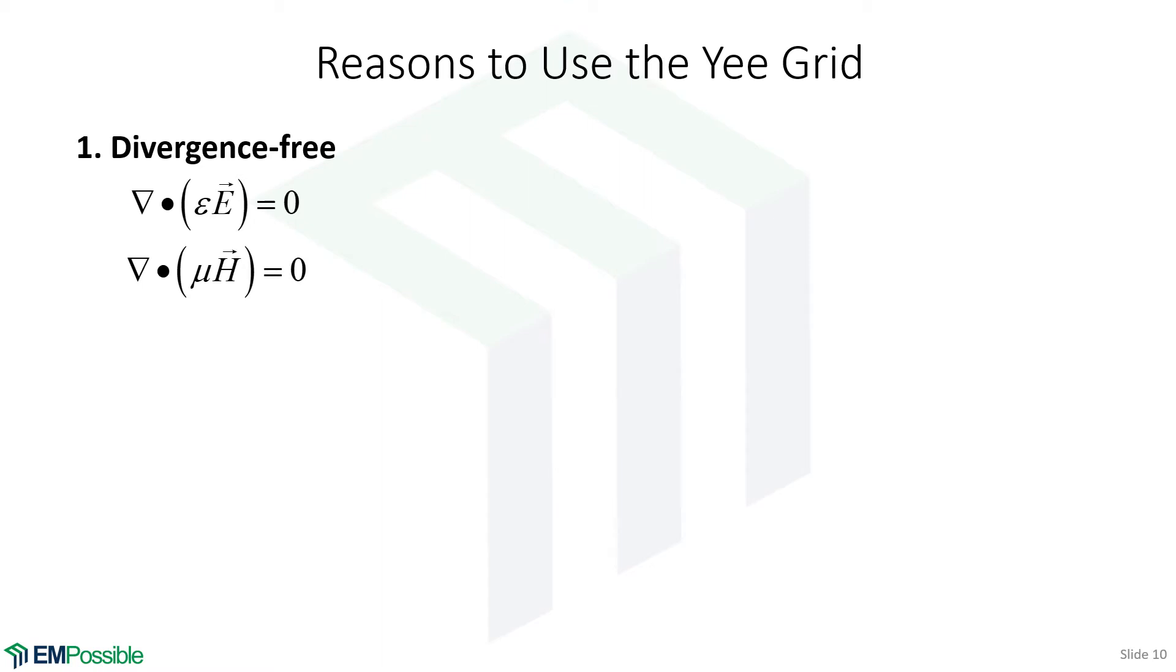Why do we want to use the Yee grid scheme? First of all, we're going to formulate everything from the curl equations, and we might ask, but what about the divergence equations? If we stagger the field components according to the Yee grid scheme, our grid is divergence-free. So we have satisfied the divergence equations solely by staggering the field components. That is not true for the co-located grid.